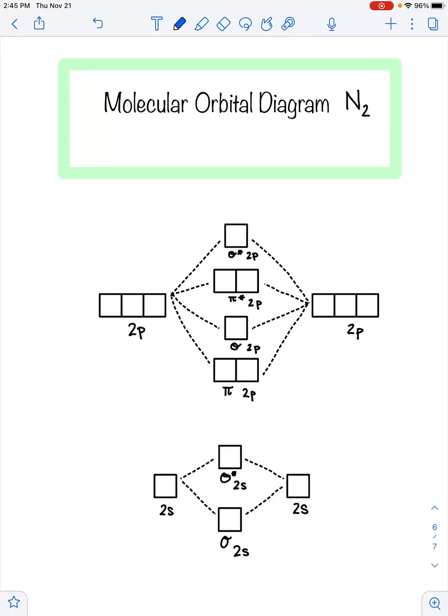Today we're going to be doing the molecular orbital diagram for N2. So first you're going to write a nitrogen on either side, and nitrogen has five valence electrons. And then in the middle you're going to write N2, since you have two of them.